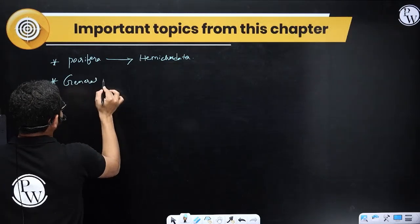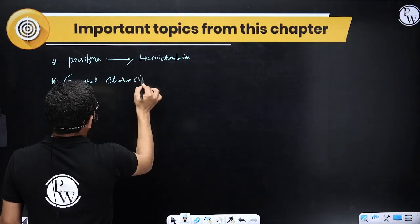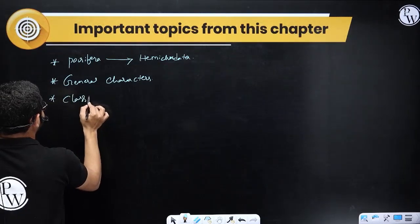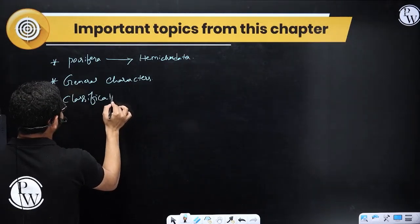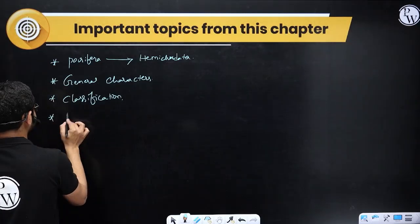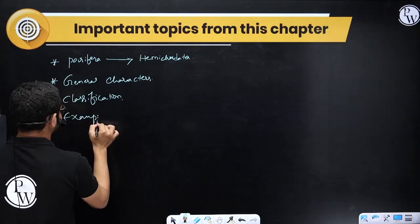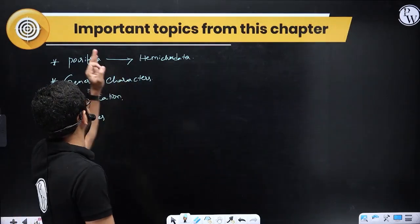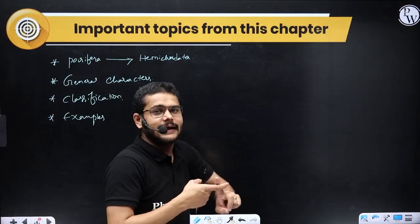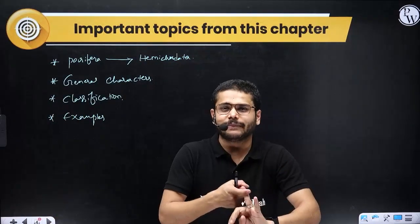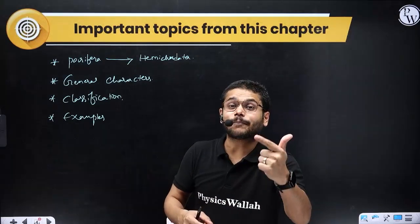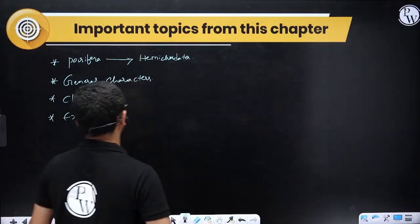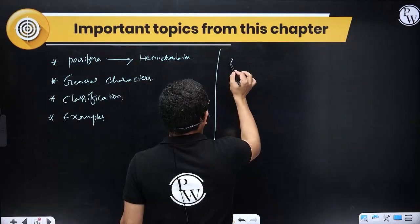First, their general characteristics you need to remember. The general character and then the classification you need to remember. Examples are also important. Each and every topic you need to remember. Hemichordata, Porifera, Platyhelminthes, Aschelminthes, Annelida, Arthropoda, Mollusca, Echinodermata, Hemichordata - each one you need to remember. Next, for each phylum, you need to study their morphology and anatomy.